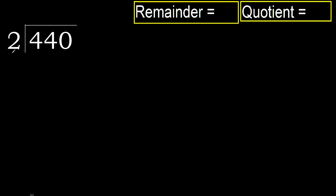440 divided by 2. 4 is not less, therefore work with 4. 2 times which number is nearest to 4 but not greater? 2 times 3 is 6 — 6 is greater. 2 times 2 is 4 — 4 is not greater. OK.